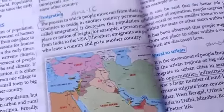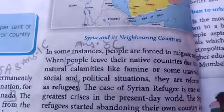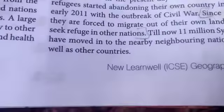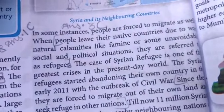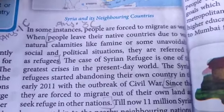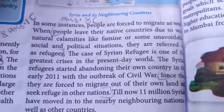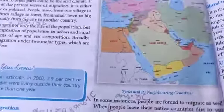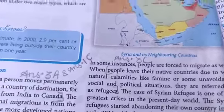Over here in the textbook there is a map of Syria and its neighboring countries. In some instances, people are forced to migrate as well. When people leave their native countries due to war, natural calamities like famine, or some unavoidable social and political situations, they are referred to as refugees. This is the case of the Syrian refugees, which is one of the greatest crises in the present-day world. Just a few months back, India and other countries were also dealing with Rohingya refugees who were coming from Bangladesh.